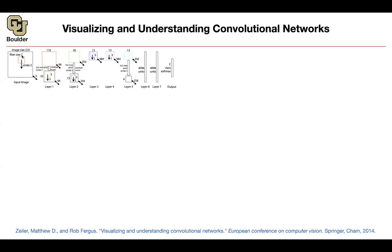One improvement is that rather than using a filter size of 11, they're gonna use a filter size of seven. And rather than having a stride of four, they're gonna have a stride of two. But how did they come up with these changes? It's not random. They actually took a look at their network and their data to make these two changes and managed to improve the results, the accuracy over AlexNet.